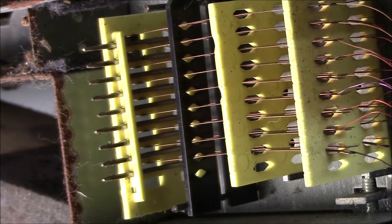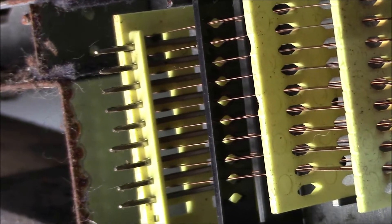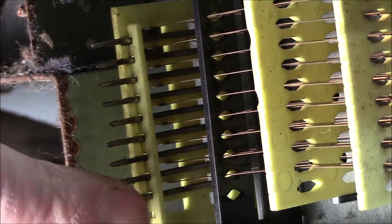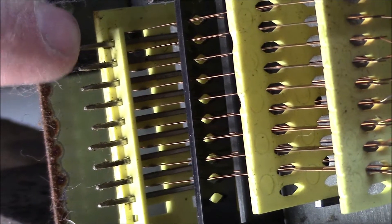This is the business end of the contacts. Those bars, the horizontal bars that you see there are the bus bars. We're looking at the right side of the keyboard at this time.